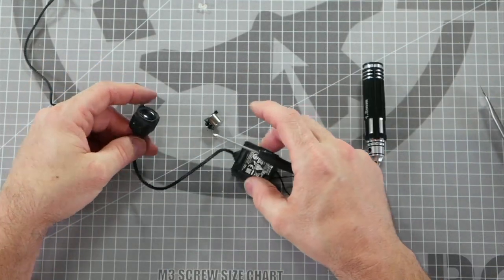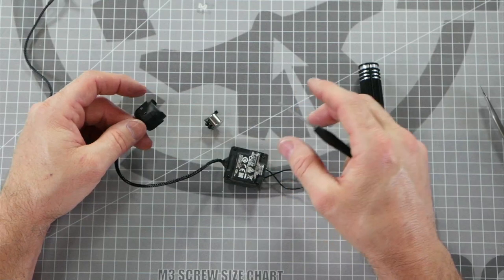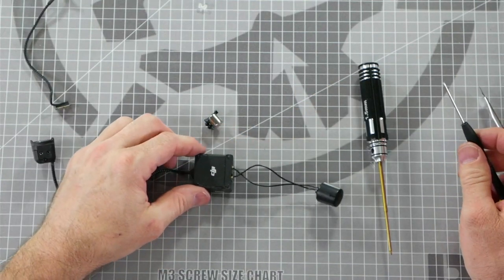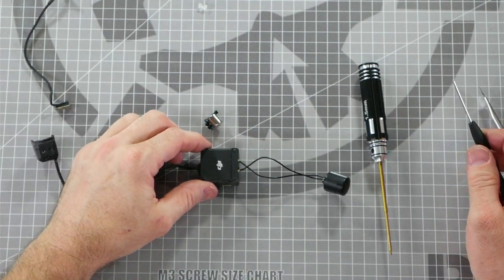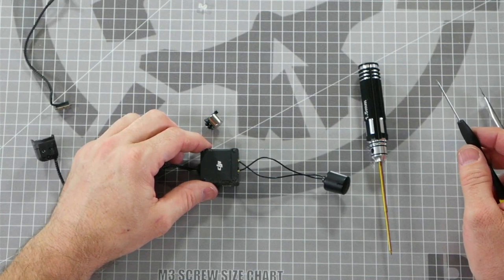And there you have it that's how you change the camera cable in the DJI-03 system. Thanks for watching guys be sure to like and subscribe to the channel if you want to see more videos like this. I'm Let's FlyRC and we'll see you next time on Rotorite Workbench.